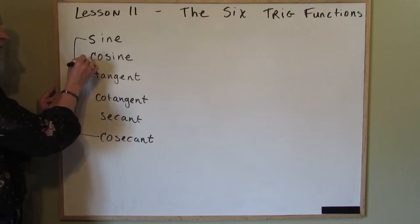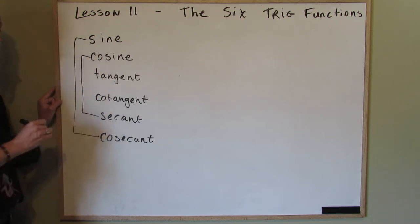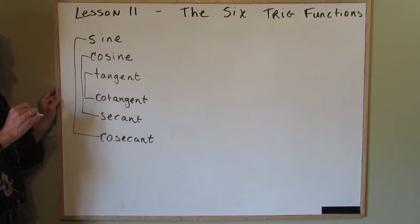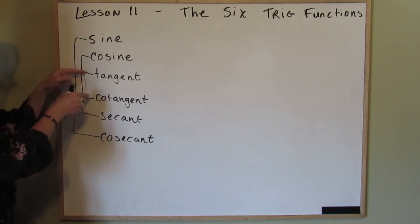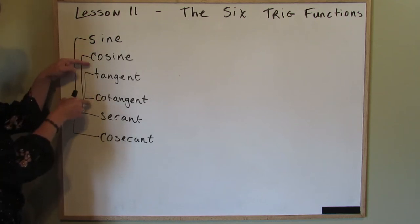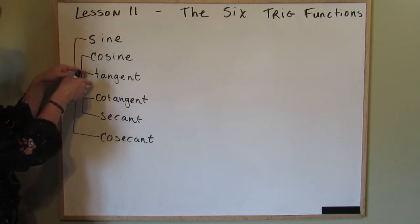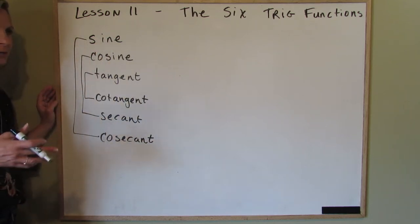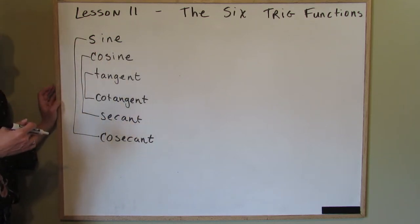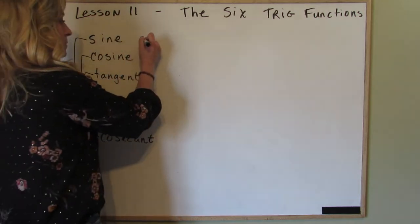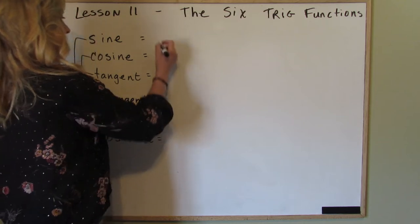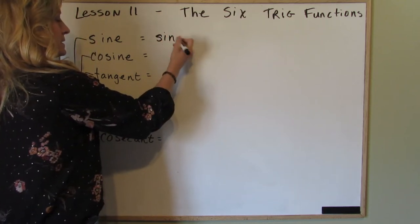The cosine and the secant are reciprocals of each other, and the tangent and the cotangent are reciprocals of each other. If you see how I connected from inner to outer, outside to in — if you write them in order you can always remember what's a reciprocal of what. Let's just put in their abbreviations.